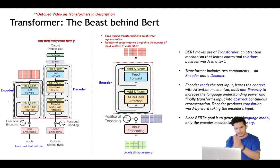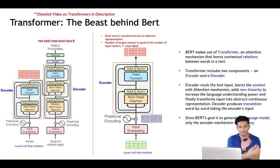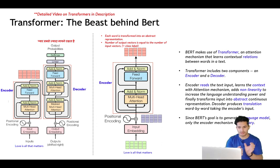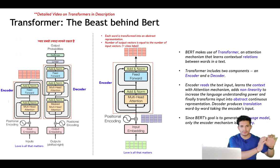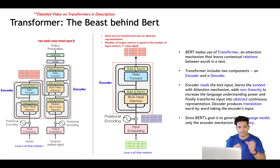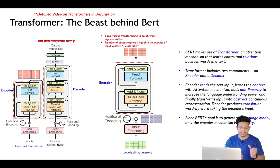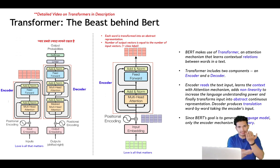During translation, the translation happens word by word, and for a particular word it may have a strong dependency on some input word. Attention basically means how much to attend to previous inputs — some inputs may need more attention when generating a particular output, and some may need less. In the transformer there is multi-headed attention, so multiple layers of attention work in parallel, which makes it so powerful.